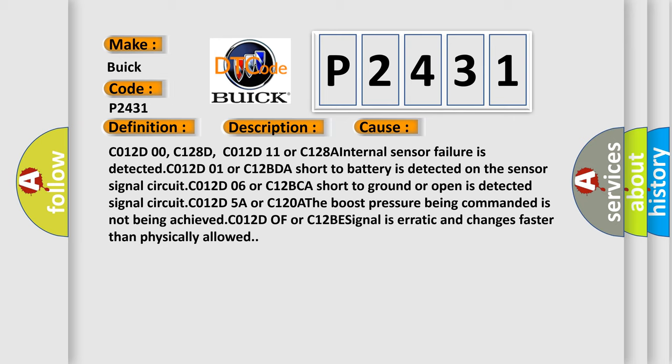C012D00, C128D, C012D11 or C128A internal sensor failure is detected. C012D01 or C12BDA short to battery is detected on the sensor signal circuit. C012D06 or C12BCA short to ground or open is detected in the sensor signal circuit. C012D5A or C120A the boost pressure being commanded is not being achieved. C012D0F or C12BE signal is erratic and changes faster than physically allowed.